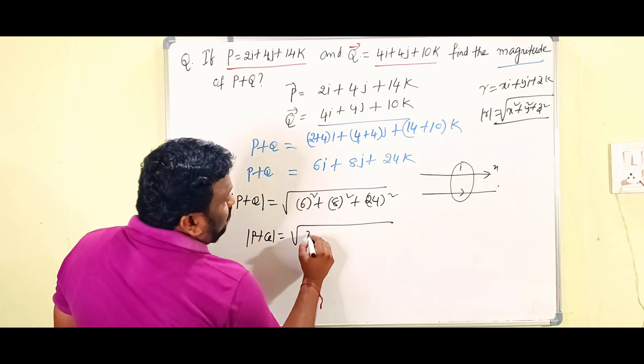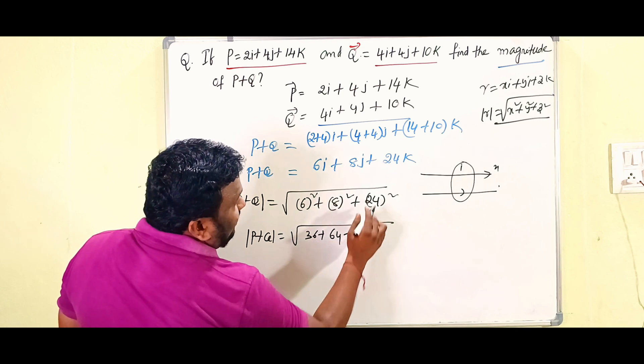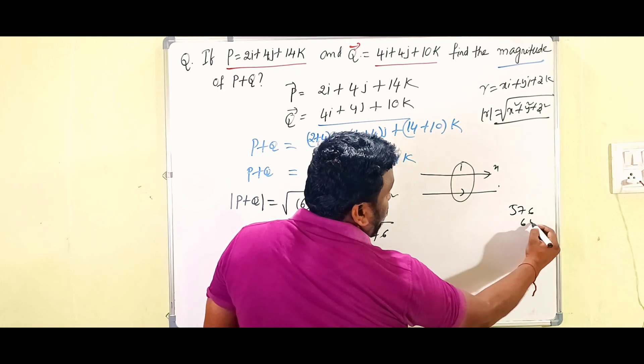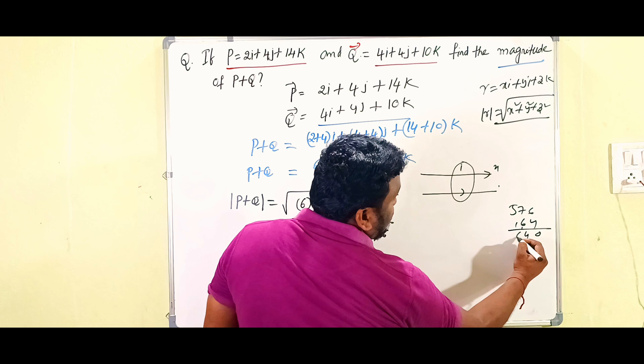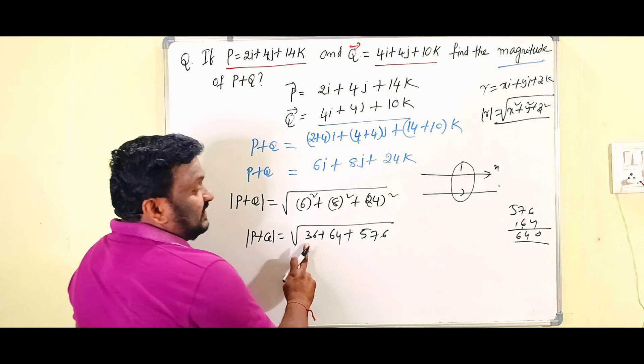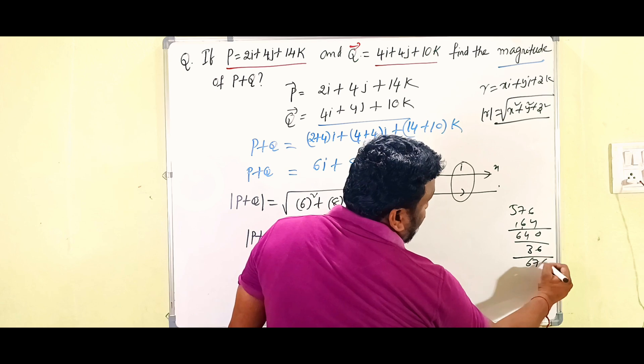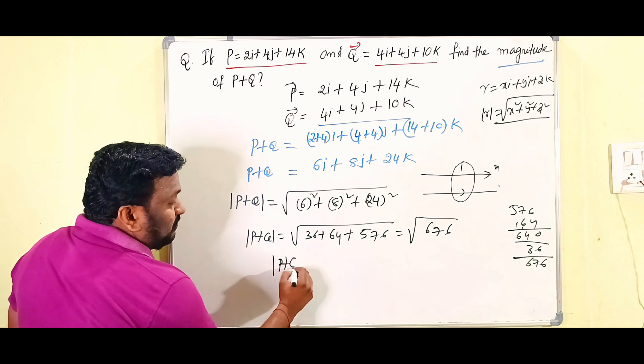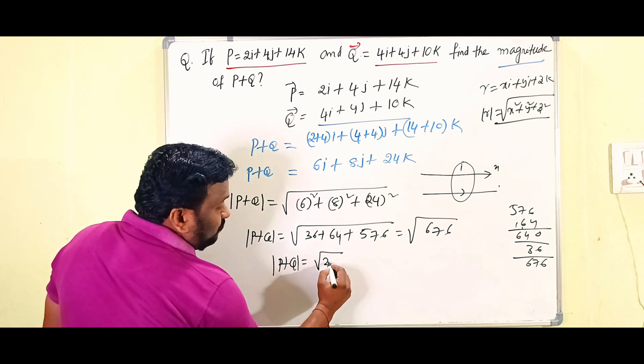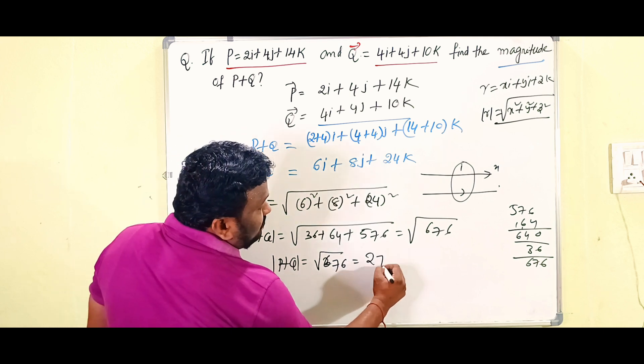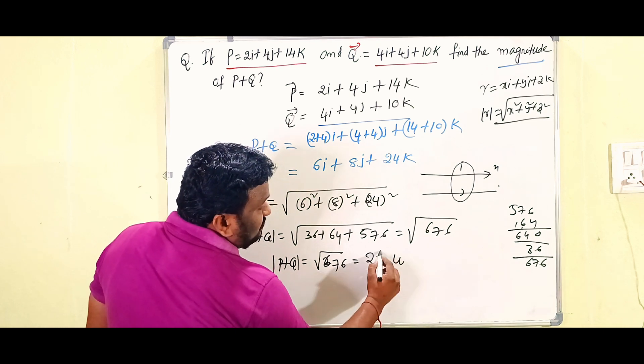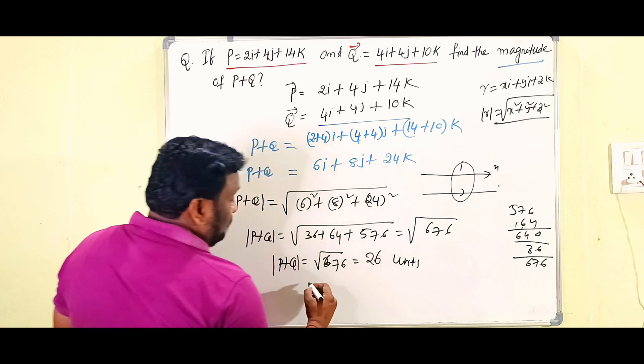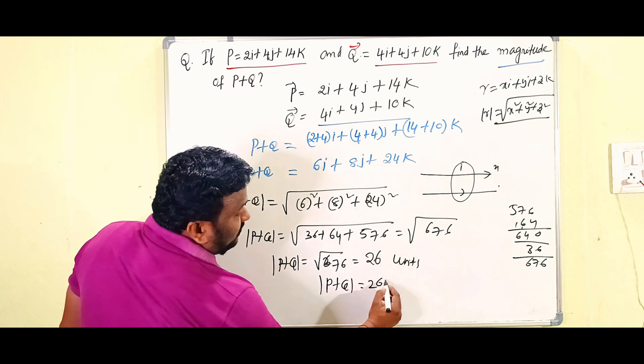Then what you have to write: mod of P plus Q is equal to under root of 6 square is 36 plus 8 square is 64 plus 24 square is 576. So 576 plus 64 is 640, and now it is 36, so that is 676. That is under root of 676. Therefore, mod of P plus Q is equal to 26 units.